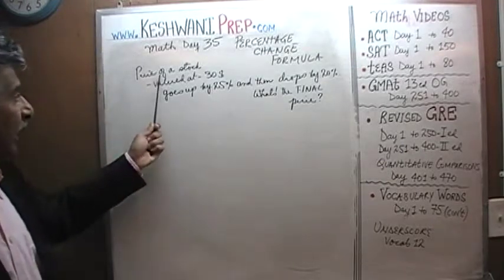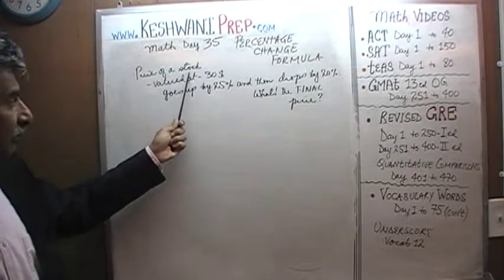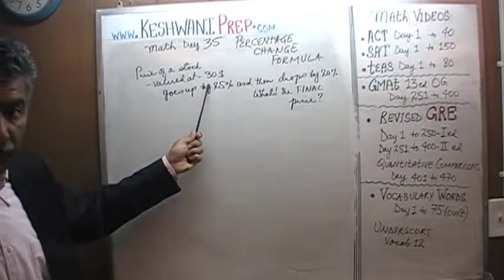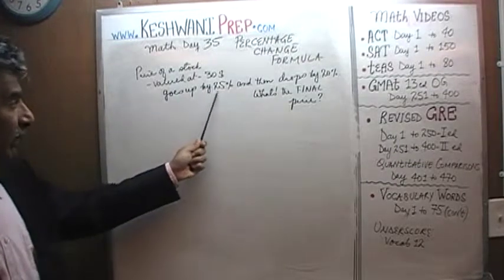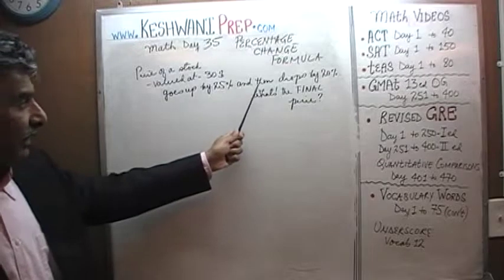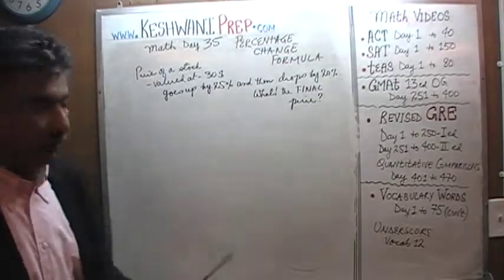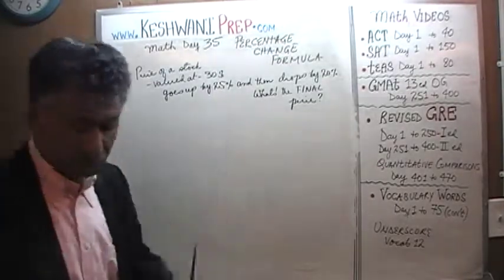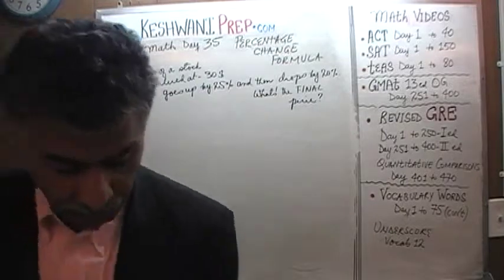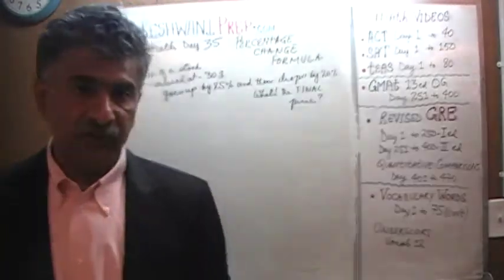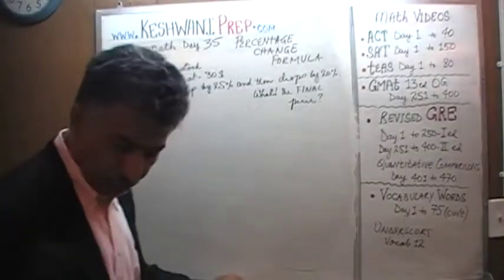The problem tells us that a price of a stock, which is valued at $30 to begin with, goes up by 25% and then after that it drops by 20%. The question is very straightforward. The question simply is, what's the final price? Let's find out, shall we?